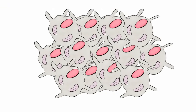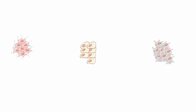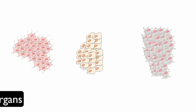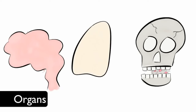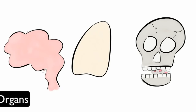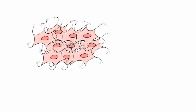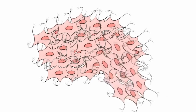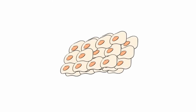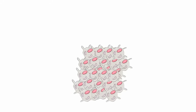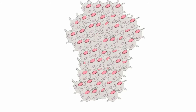When a group of tissues that perform a specific function join together, they form organs. Brain tissue comes together to make your brain — your brain is an organ. Lung tissue comes together to make your lungs. And bone tissue comes together to make individual bones.